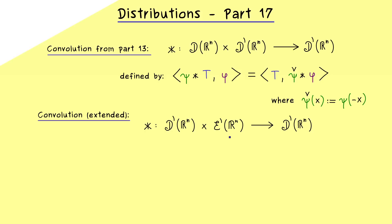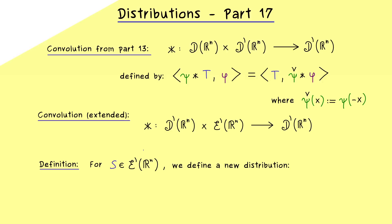You should already see that the advantage of having a distribution with compact support is that we can substitute our test function, which also has compact support. This implies that we have to define the check operation for distributions as well. So our first definition is: what is this reflection for distributions? Our distribution with compact support is denoted by s, and for this one we define a new distribution s-check. We define this distribution by pushing the action to the test function phi — we just use this reflection operator on the test function, and for that we already know the pointwise definition.